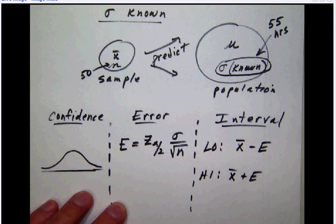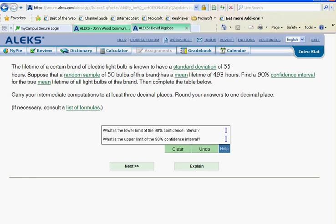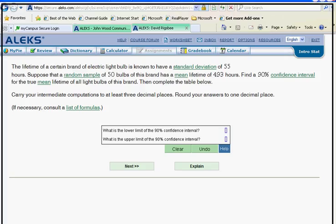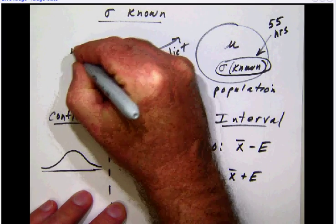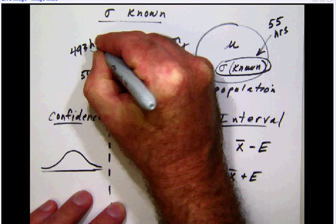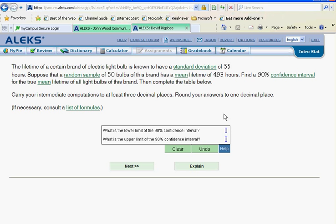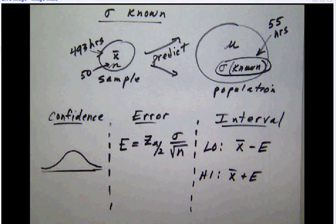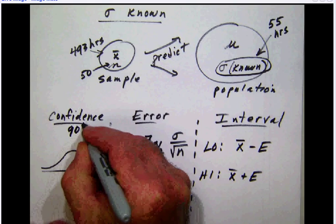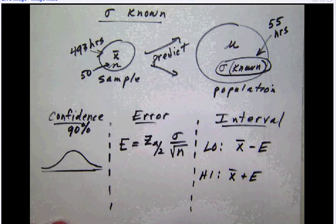We also know that we're going to have a mean. Once again, this is a sample mean referring back to this sample of 493. So our x bar is going to be 493 hours. And we have a confidence level of 90%, so our confidence is 90%.